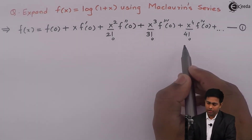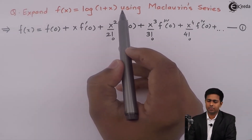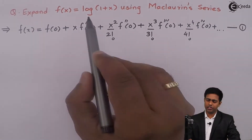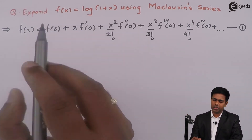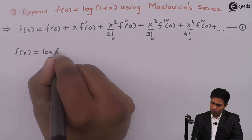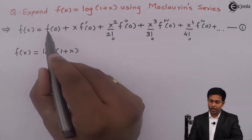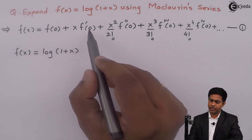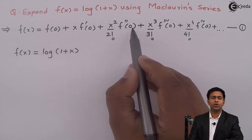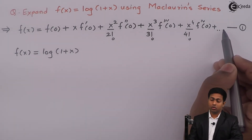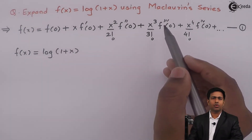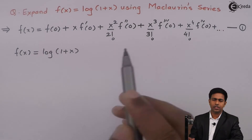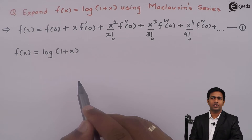Now to find the value of log(1+x) using this series, we need to find the terms of the series and substitute their values. Here f(x) = log(1+x). We get f(0) by substituting x = 0. To get further terms, we need f'(x), f''(x), and so on. So let's find all the derivatives and then substitute x = 0 to get the expansion of log(1+x) using the Maclaurin series.